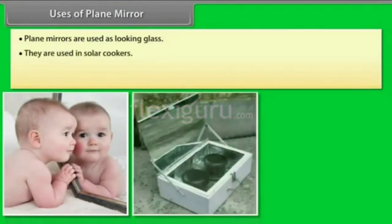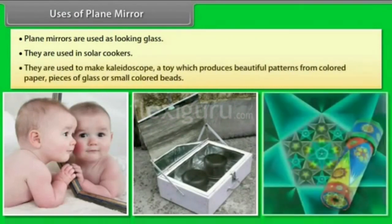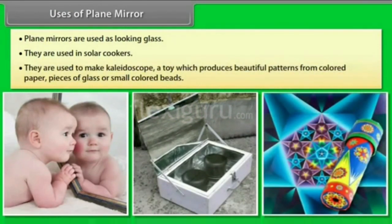Plane mirrors are used as a looking glass. They are used in solar cookers. They are used to make a color disco — a toy which produces beautiful patterns from colored paper, pieces of glass, or small colored beads.